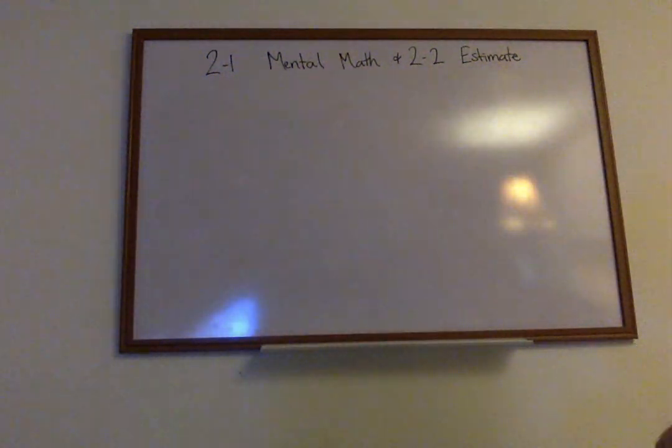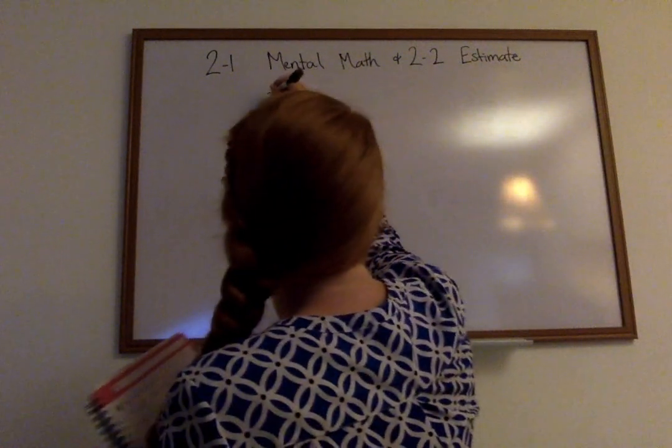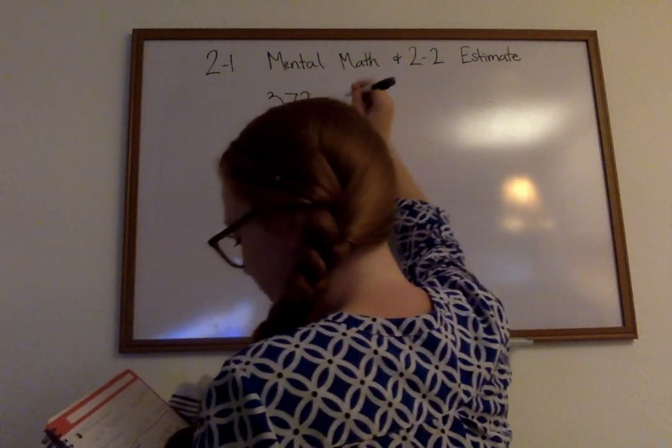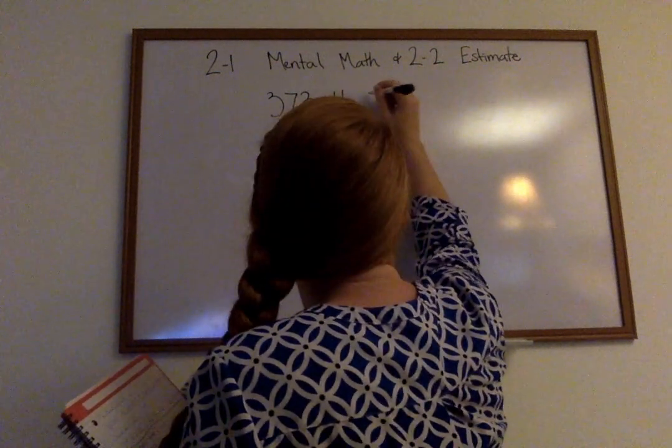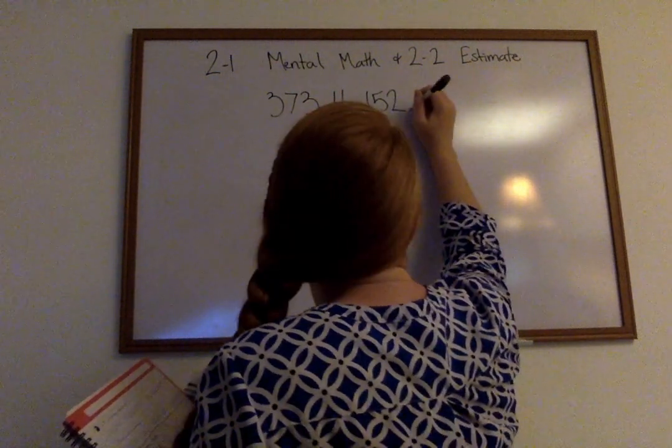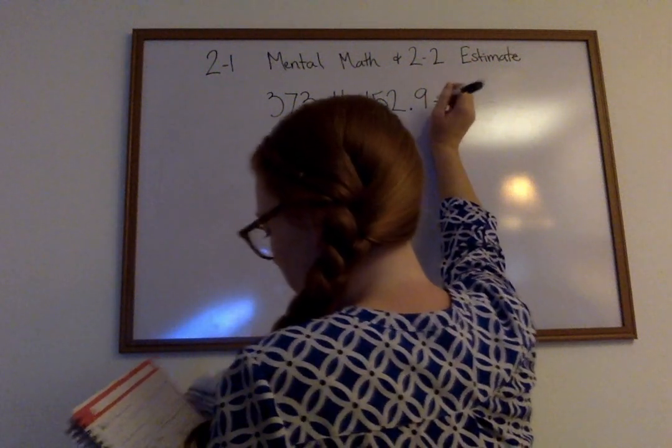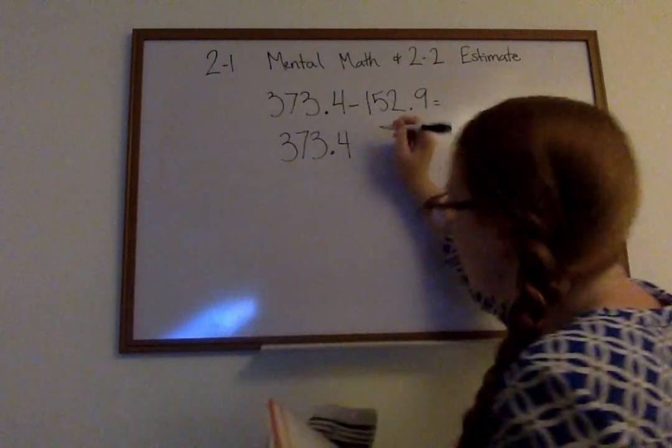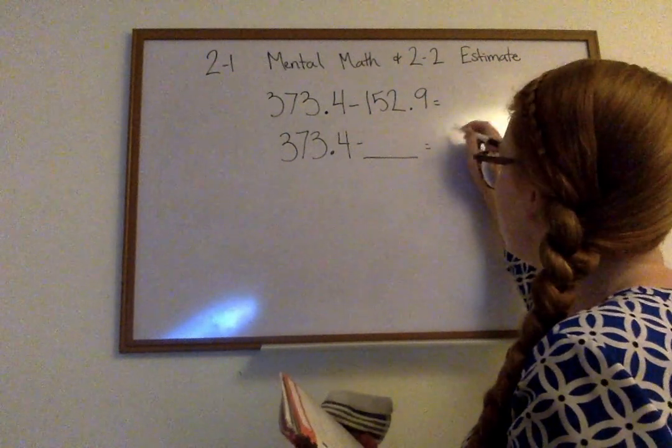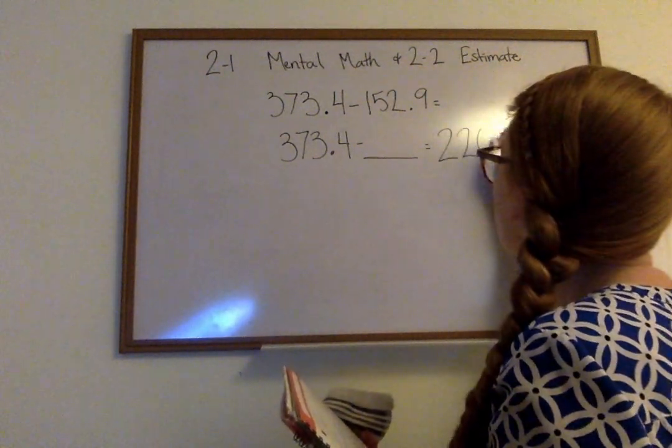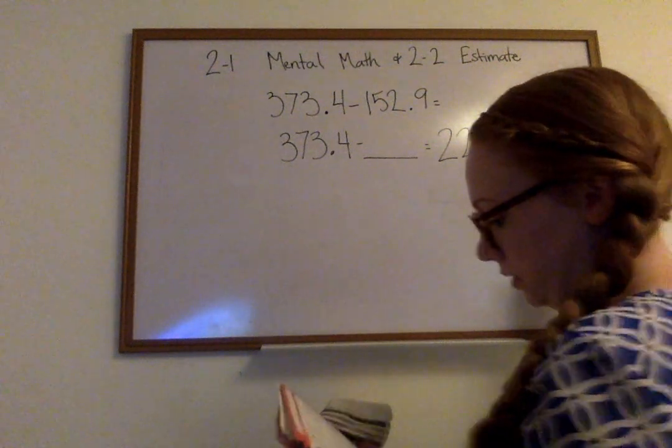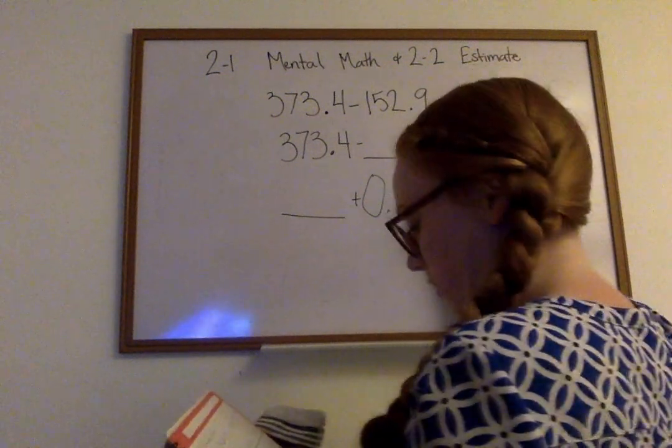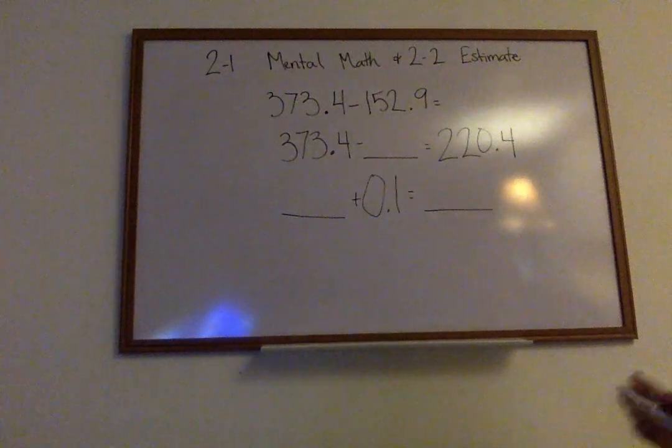Another one we are looking at is 373.4 minus 152.9 equals 373.4 minus 152, 273.4 minus blank equals 224.4, blank plus 0.1 equals blank. So this one's a little bit trickier than the last one.